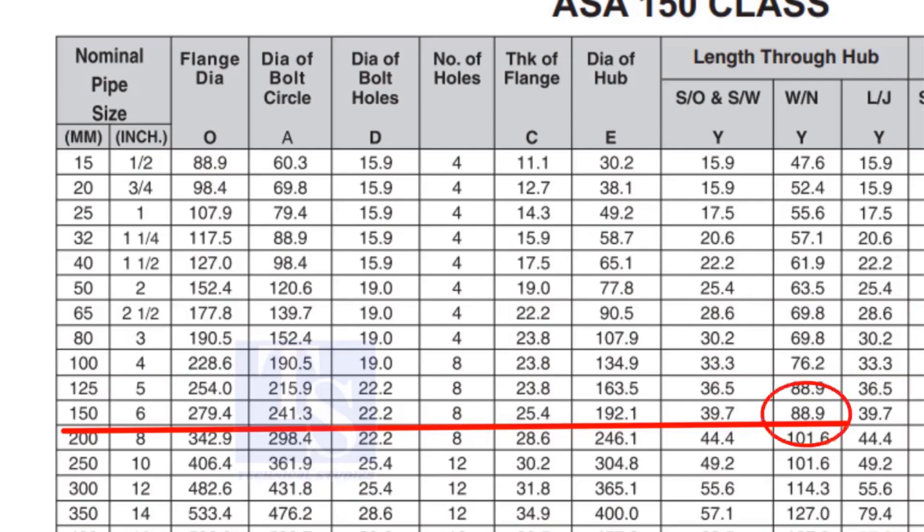Check the height of the flange in the table. Since the pressure rating is 150, the height of the flange is 88.9mm. Note down the height.